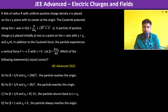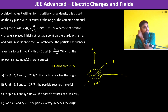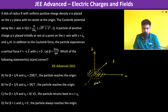A disk of radius R with uniform positive charge density sigma is placed on the xy plane with its center at the origin. The z-axis is vertical, with x and y axes in the plane. This disk is placed on the xy plane centered at the origin, and we need to find the Coulomb potential along the z-axis.